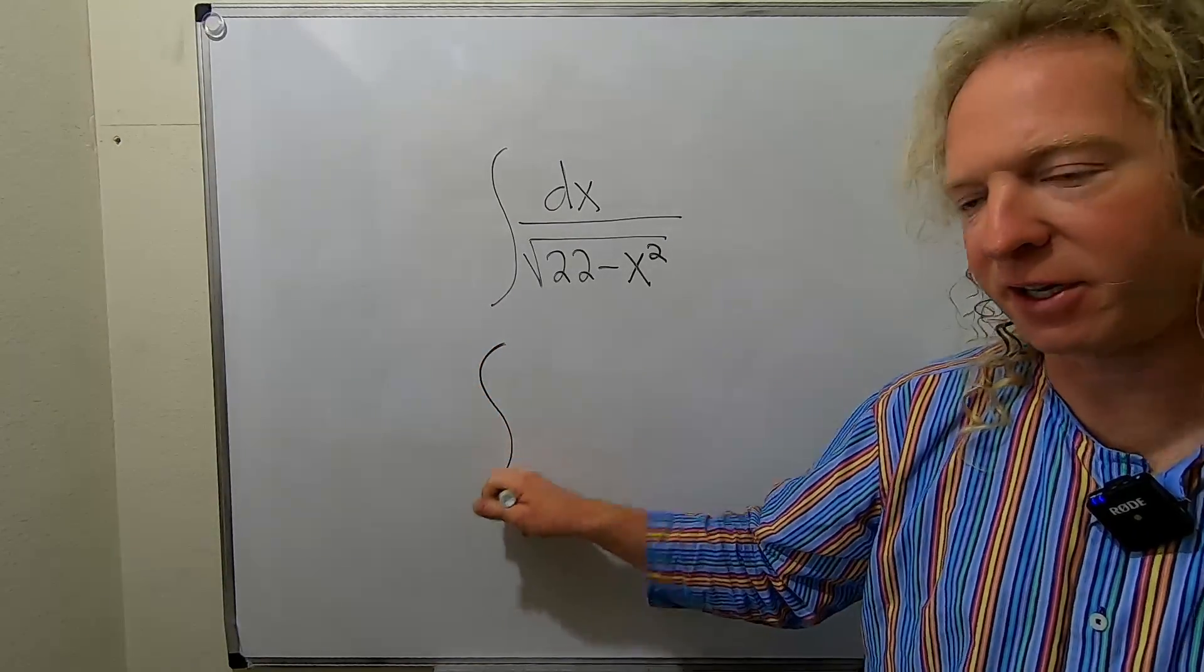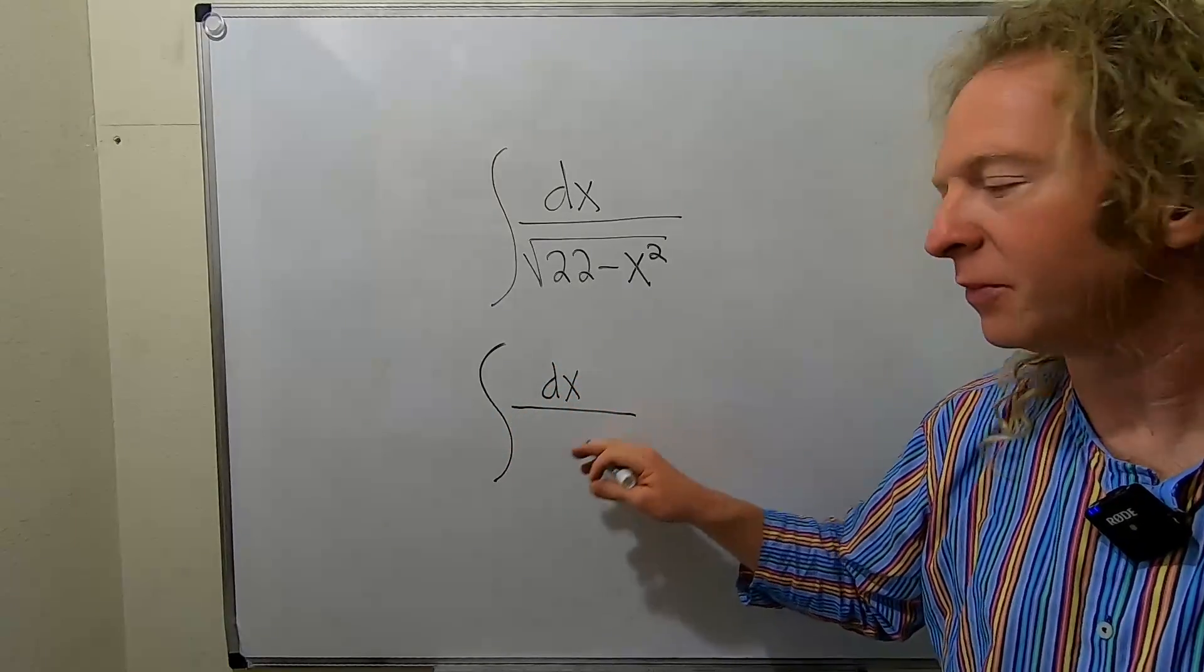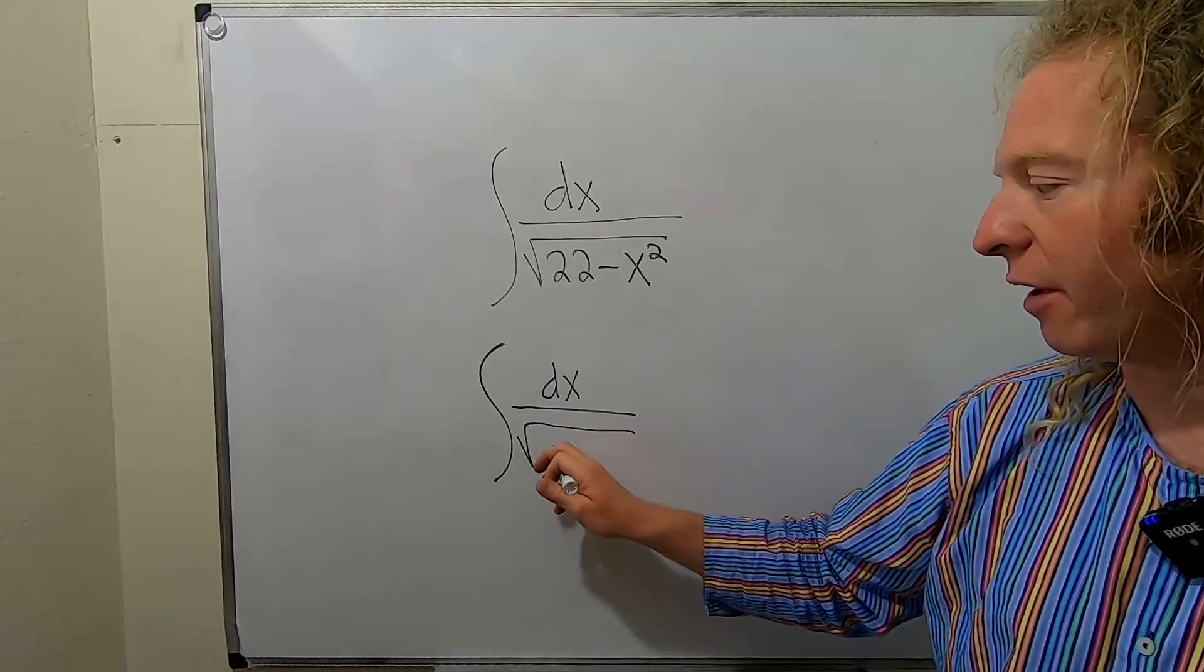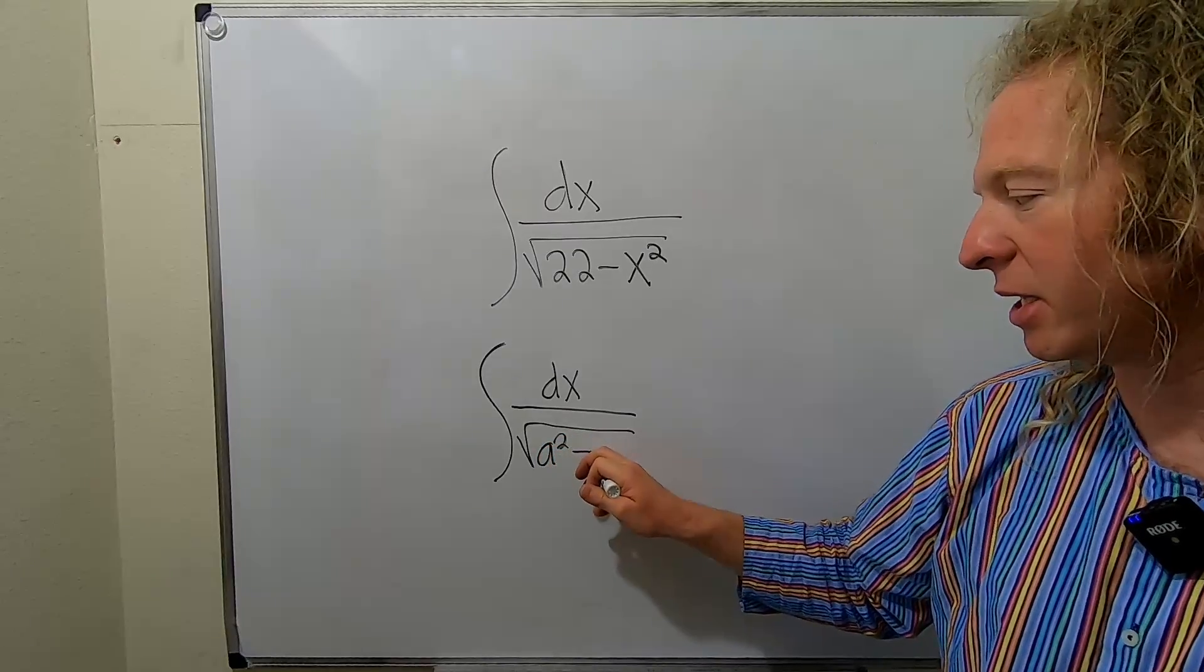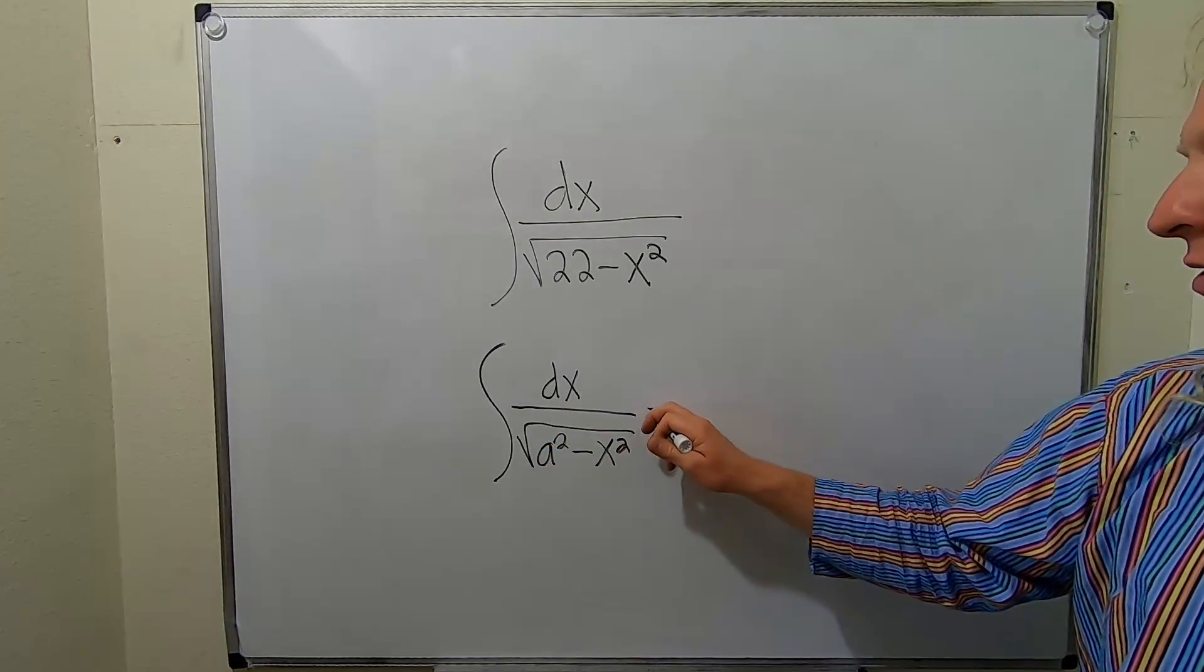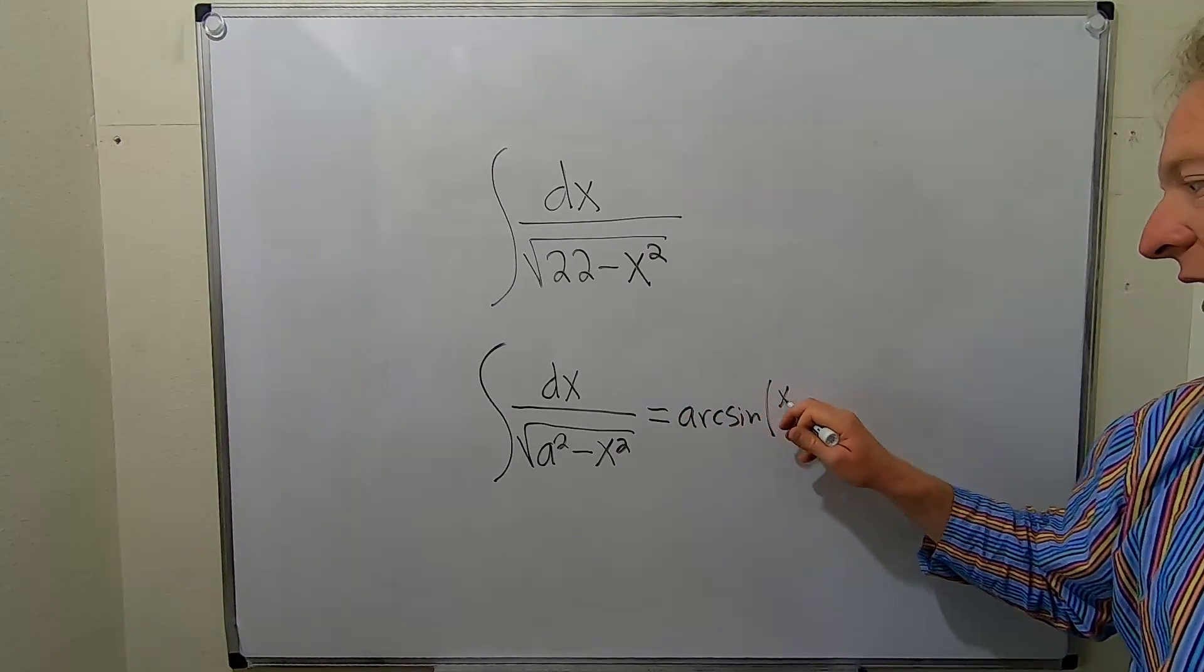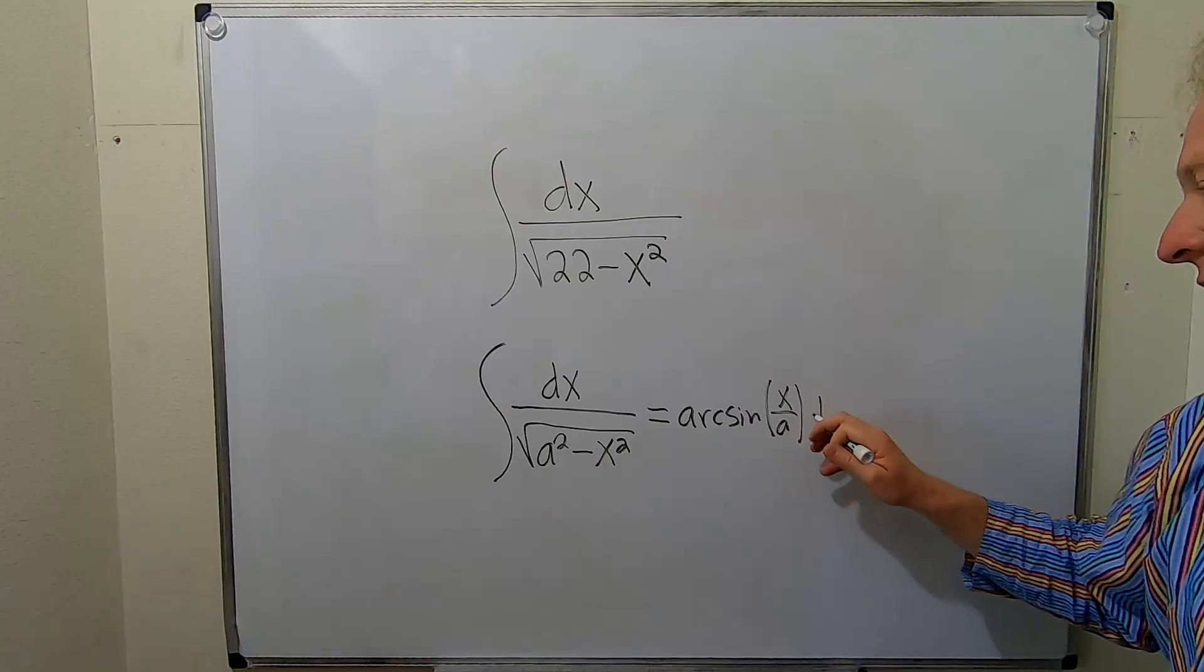So if you have the indefinite integral of dx over the square root of a squared minus x squared, this is a super important formula. This is equal to the arcsine of x over a plus c.